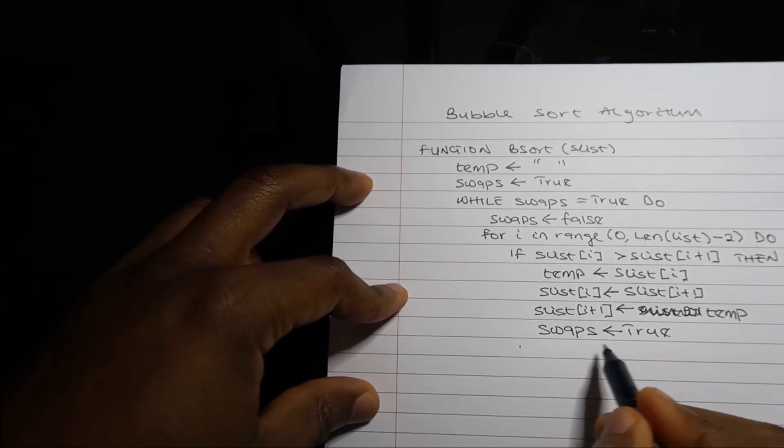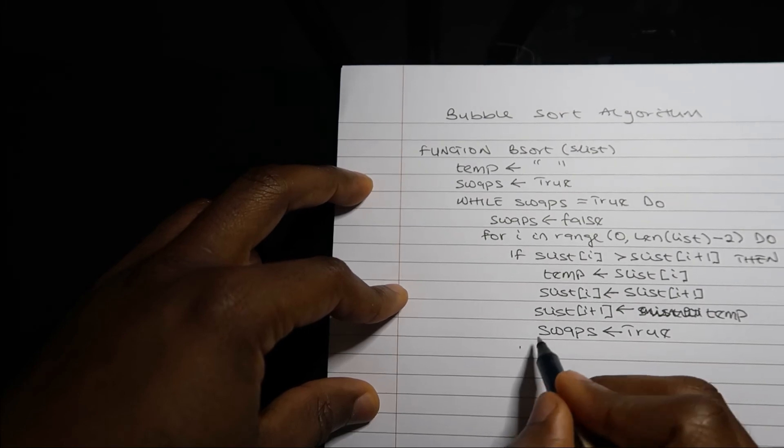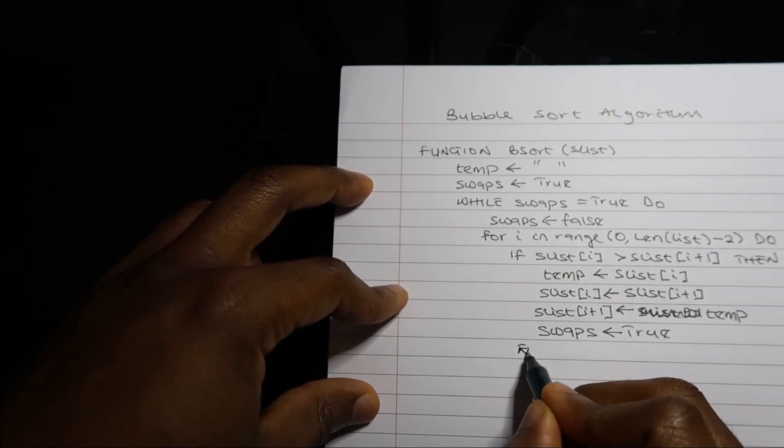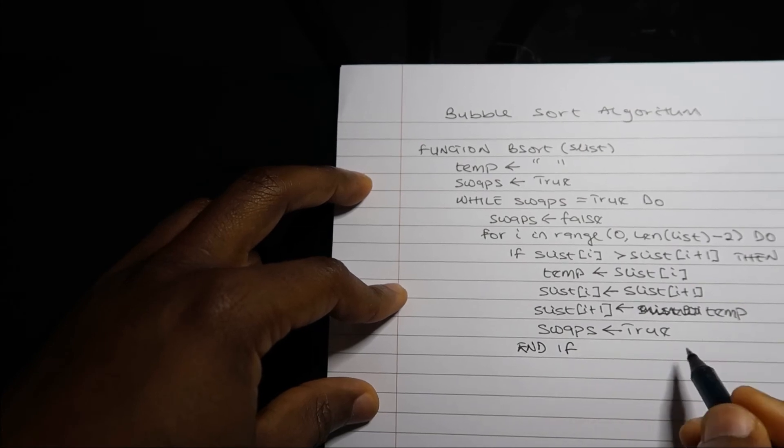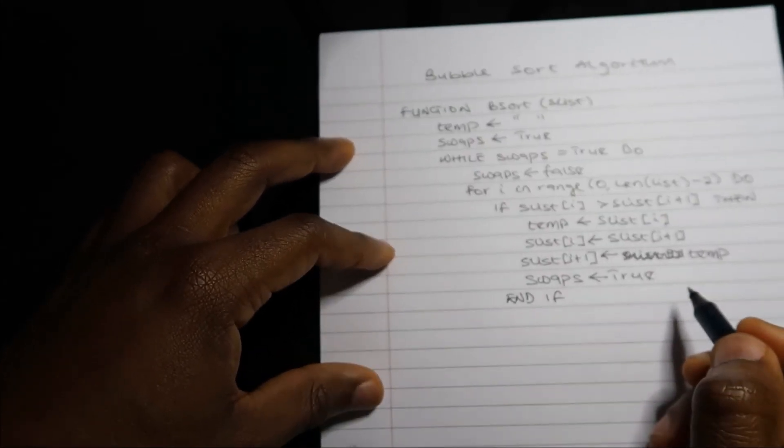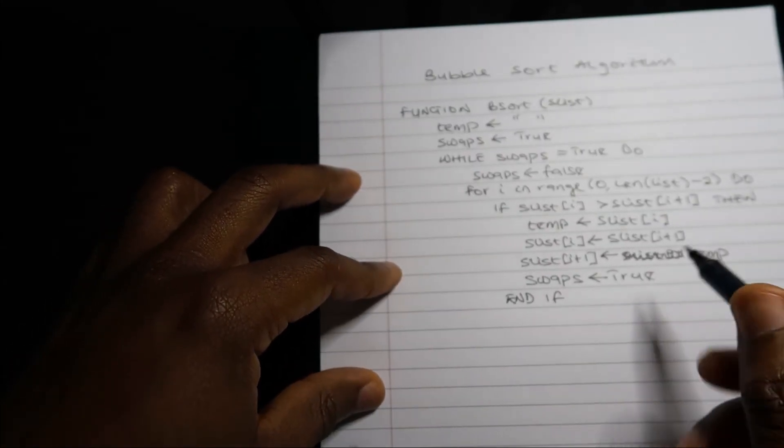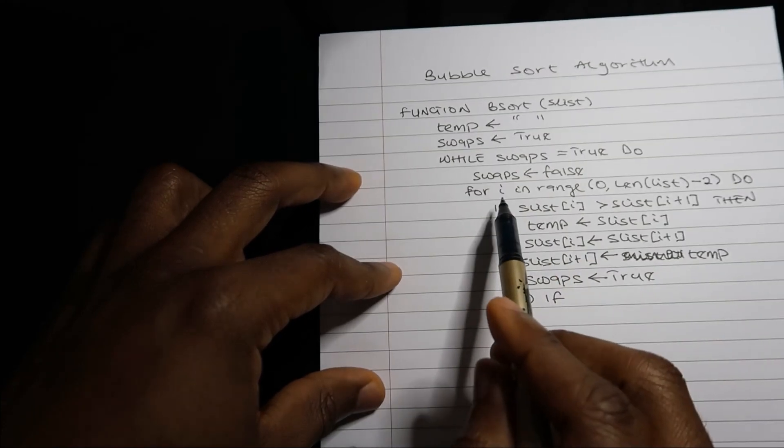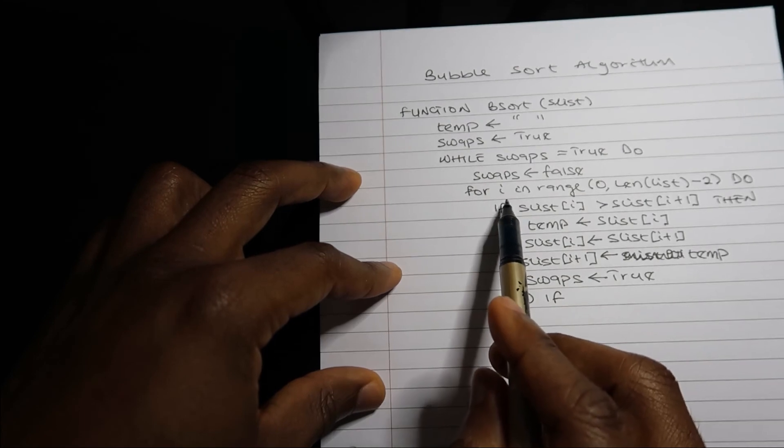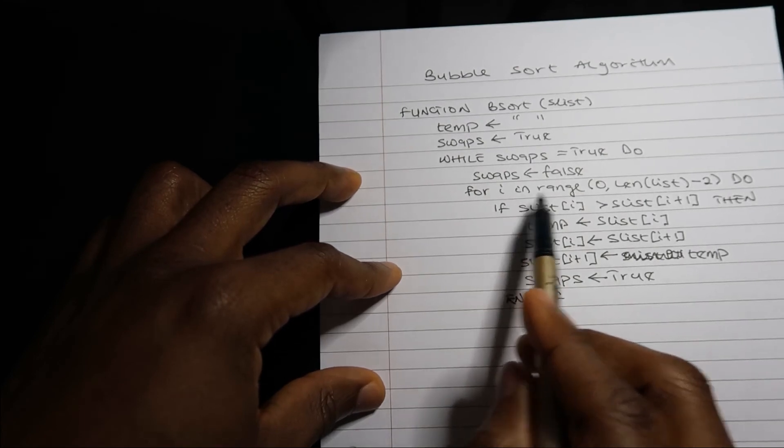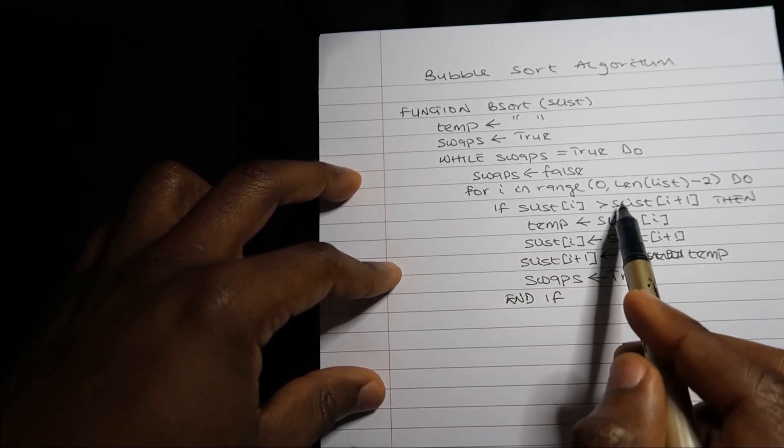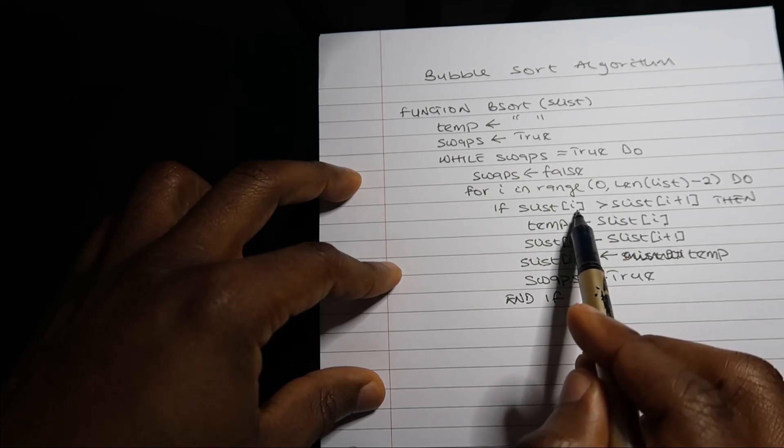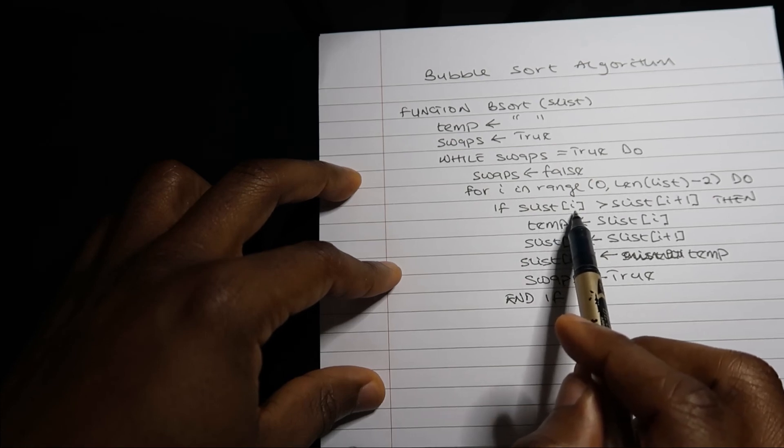Now once I turn my swaps back to true, I can end my if statement there. And then it will go back to my for loop. When I go back to my for loop, i will become one. If i becomes one, i+1 will then be two, so this will be comparing the second item in my list to the third item.